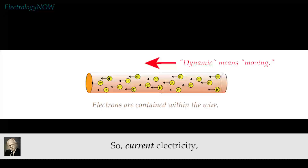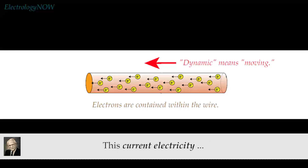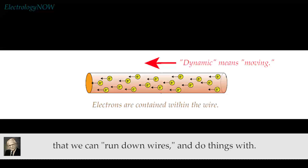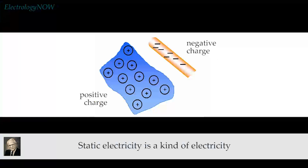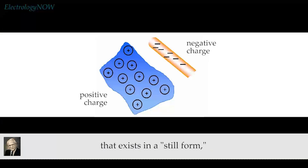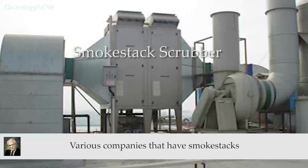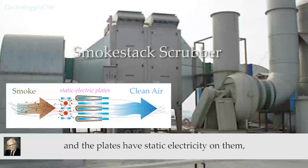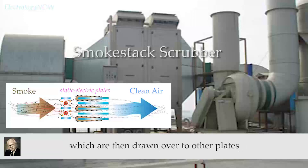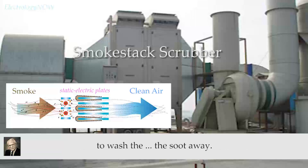Current electricity — electricity produced by magnetism — is dynamic. It's current electricity; it's electricity that we can run down wires and do things with. Static electricity is a kind of electricity that exists in a still form, producing charges that can be measured. Various companies that have smoke stacks are running the smoke up through plates, and the plates have static electricity on them. The static electricity charges the particles, which are then drawn over to other plates, and then the plates are washed down with water to wash the soot away.